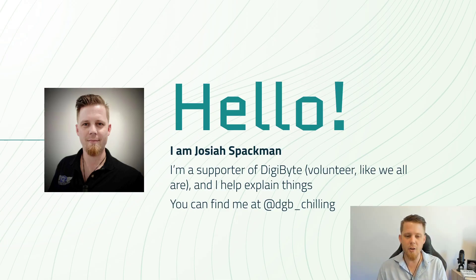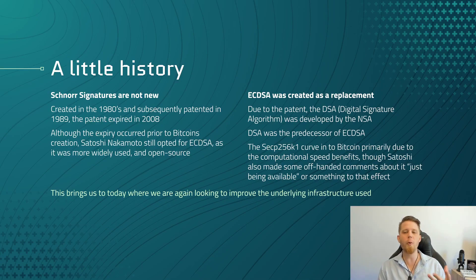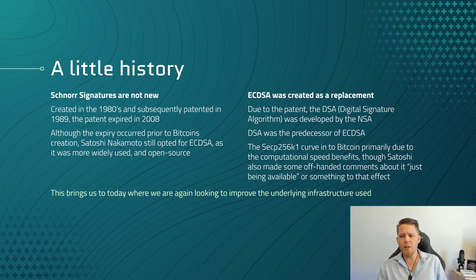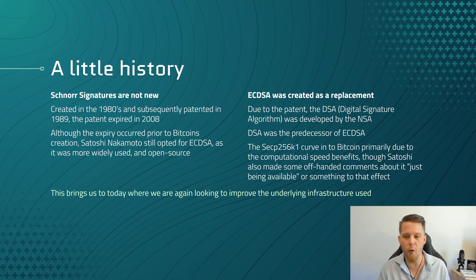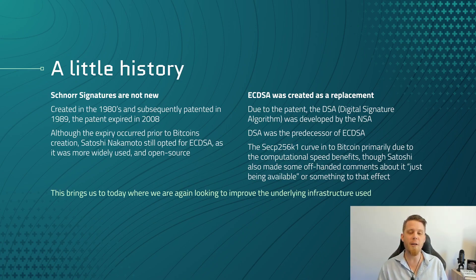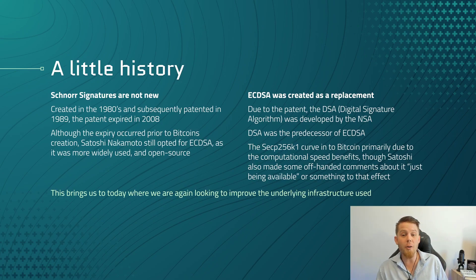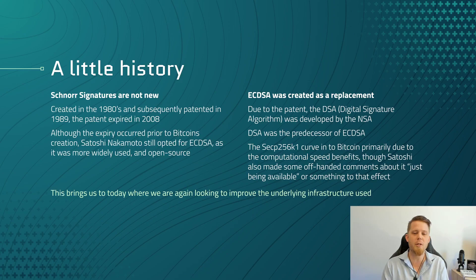Let's start with a little bit of history before we dive into what Schnorr signatures are and why we want them. Schnorr signatures themselves are not new. They were originally created in the 80s by a German cryptographer by the name of Klaus Schnorr — an absolute genius who retired in 2011 after spending 40 years at the Johann Wolfgang Goethe University in Frankfurt. He patented Schnorr signatures in 1989, and that patent expired in 2008, which the keen-eyed amongst you will notice happened about a year before Bitcoin was launched in 2009.